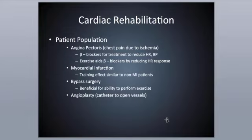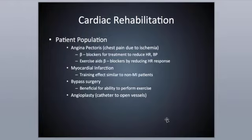Cardiac rehab. The patient population for cardiac rehab includes individuals with several different conditions. Angina pectoris — chest pain due to ischemia — is one of them. For angina, beta blockers are used to reduce heart rate and blood pressure. Exercise in this case actually aids the beta blockers because it can reduce the heart rate response, so they don't get as high of a heart rate during a certain intensity of activity.